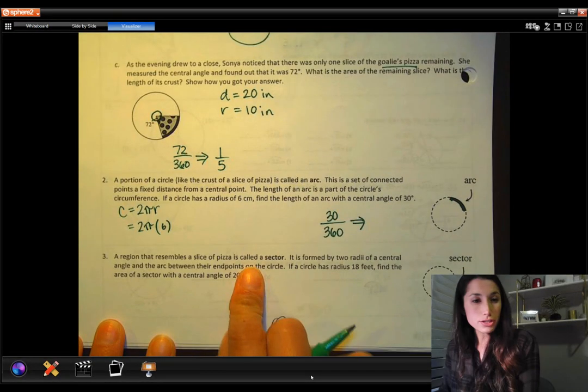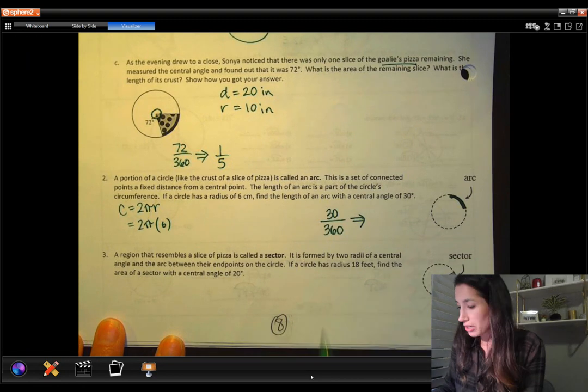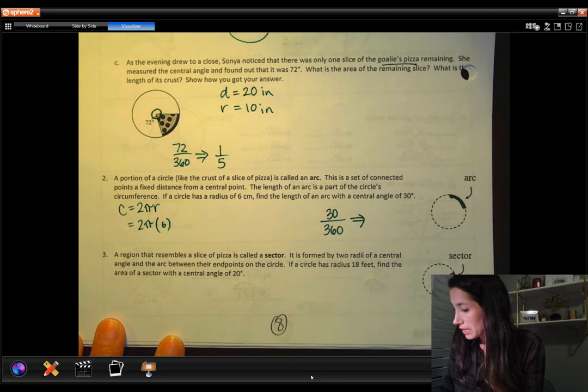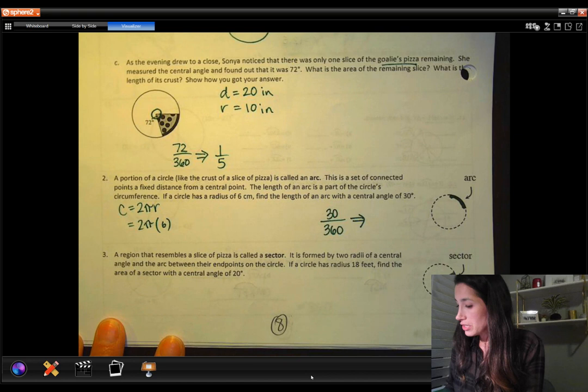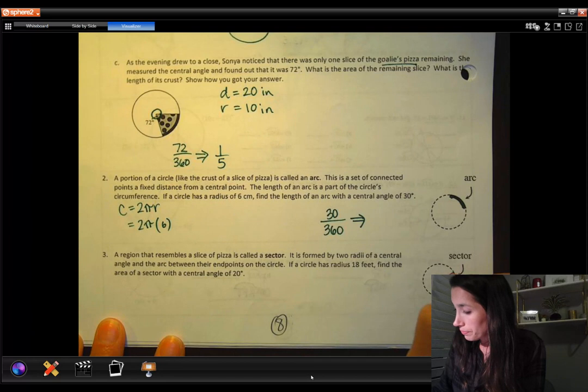And then in our last question here, we're talking about a sector. So the area that resembles a slice of pizza is called a sector. So that's like this little section here, the area. It's formed by two radii of a central angle and the arc between their endpoints on the circle. So this is the arc between the endpoints.